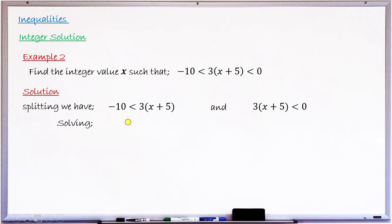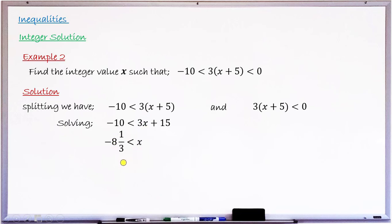Solving the first simple inequality, I expand the bracket: minus 10 less than 3x plus 15. Shifting 15 to the left gives minus 10 minus 15 less than 3x, that is minus 25 less than 3x. Dividing both sides by 3 gives minus 8 and 1 over 3 less than x. The integer values satisfying this are minus 8, minus 7, minus 6, minus 5, minus 4, and increasing.